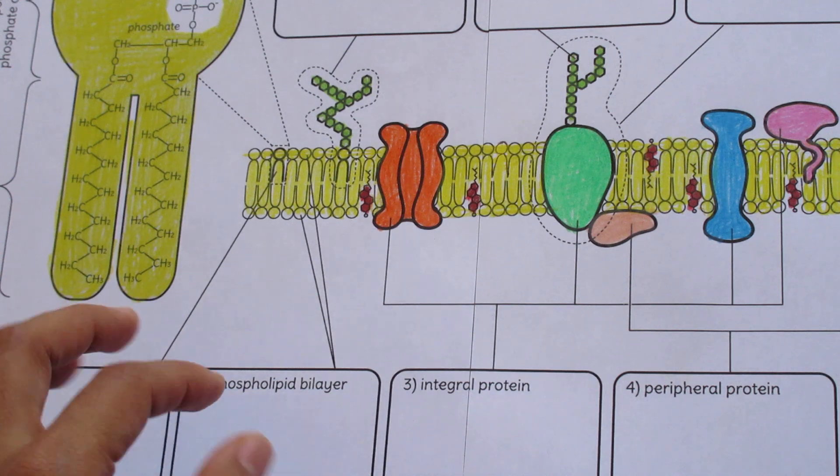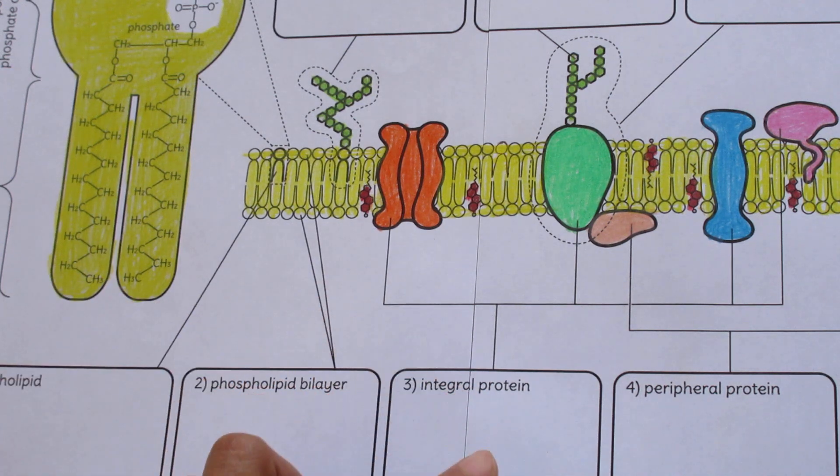This will allow you to go step-by-step through the lesson and reference each number or label as you go along. So you can say, let's look at structure number two, let's look at structure number three, it's the integral protein, etc. This is great for students who need to have more structure so that they can always find their place and you can lead them through the lesson.